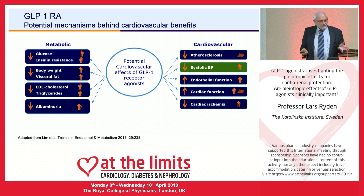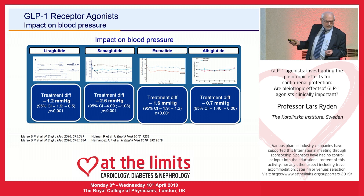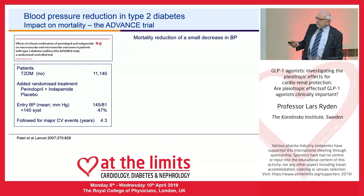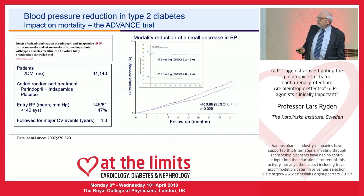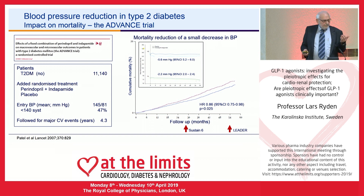Regarding systolic blood pressure: reductions of 1.2, 2.6, 1.6, and 0.7 mmHg were observed. The study with the largest impact on myocardial infarction had the lowest blood pressure reduction, which doesn't support blood pressure being very important. However, a large Australian study of about 11,000 people with type 2 diabetes showed that adding blood pressure-lowering treatment — even when baseline blood pressure was already reasonably controlled — caused a mortality reduction. The observation times in SUSTAIN-6 and LEADER were long enough that even a few mmHg reduction should have had time to impact morbidity and mortality.